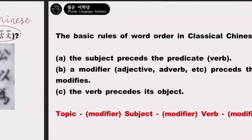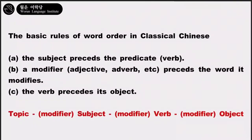The basic rules of word order in classical Chinese: A — the subject precedes the predicate; B — a modifier precedes the word it modifies; C — the verb precedes the object. In conclusion, its basic word order would be: topic, subject, verb, and object.